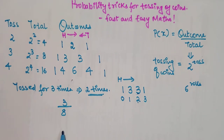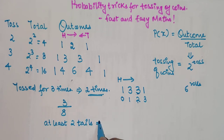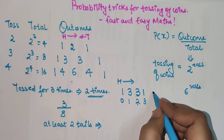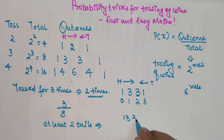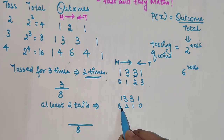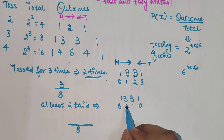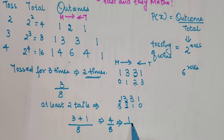Now for three tosses, what is the probability of having at least two tails? For tails, we read from right to left: zero, one, two, and three tails. At least two tails means two tails plus three tails. The outcome for two tails is 3 and for three tails is 1, giving 3 plus 1 equals 4. So the probability is 4 upon 8, which simplifies to 1 upon 2.